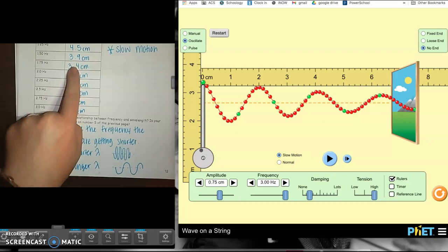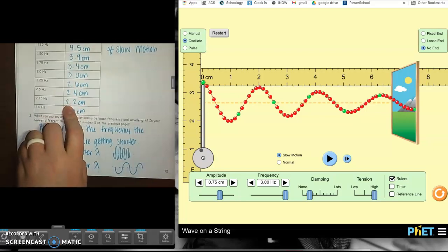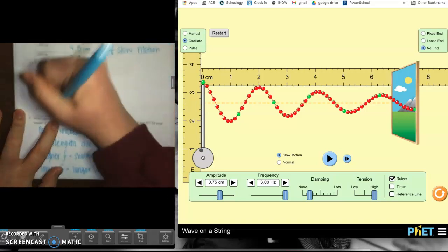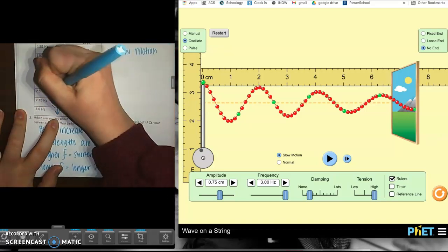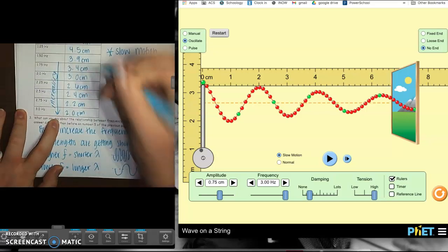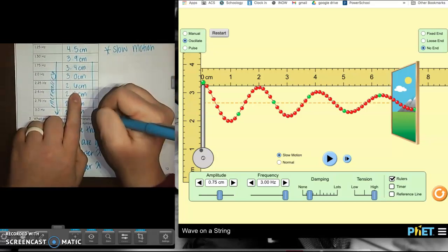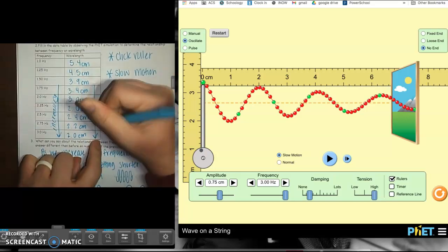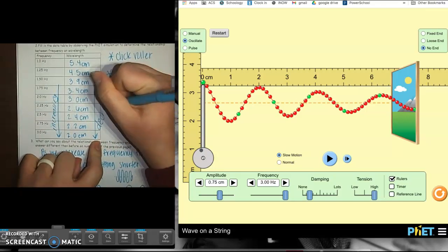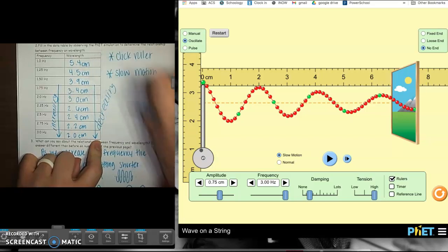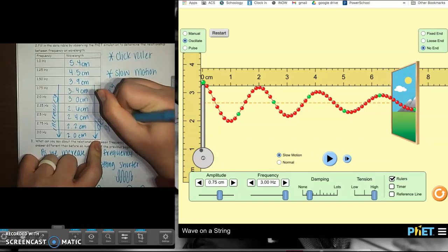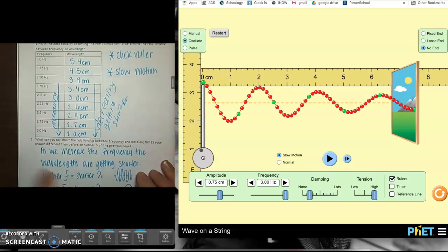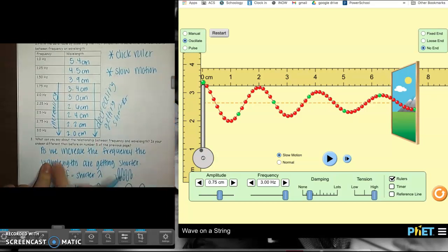So we have finished our data table. So we can see that we're increasing frequency as we go down. So we're increasing. And as we go down the data table for wavelength, the wavelength is decreasing, which means it's getting shorter.